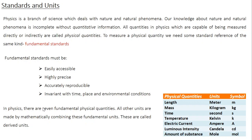In physics, there are seven fundamental physical quantities: length (meter), mass (kilogram), time (second), temperature (kelvin), electric current (ampere), luminous intensity (candela), and amount of substance (mole). There are also several other quantities which are combinations of these fundamental quantities — known as derived units. For example, velocity is length divided by time; density is mass divided by volume, or mass divided by length cubed.